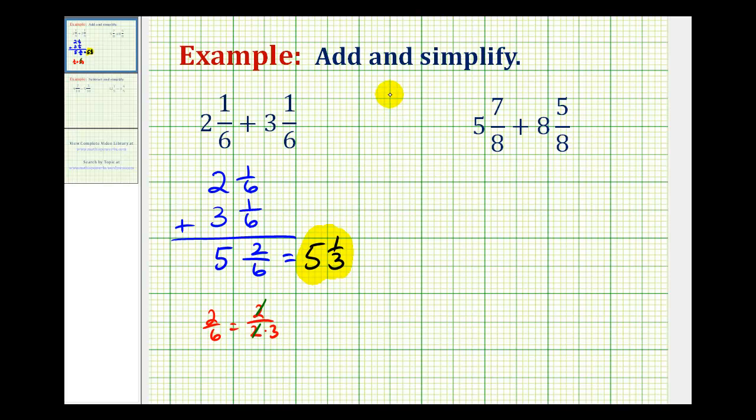Let's take a look at a second example. So, we'll first write this vertically. So, we'll have five and seven-eighths plus eight and five-eighths.